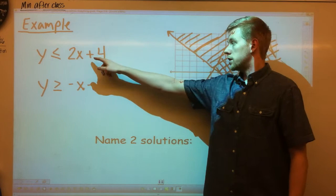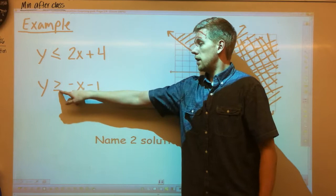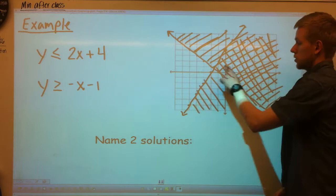We got two lines that makes our system. Y is less than or equal to, there's that symbol 2x plus 4, it's no longer equal to. Y is greater than or equal to negative x minus 1. So how do I do this? I just graph it like I normally would.